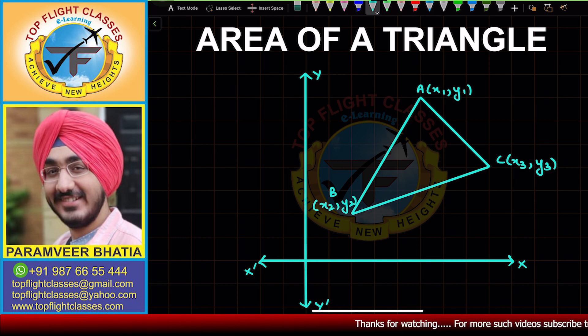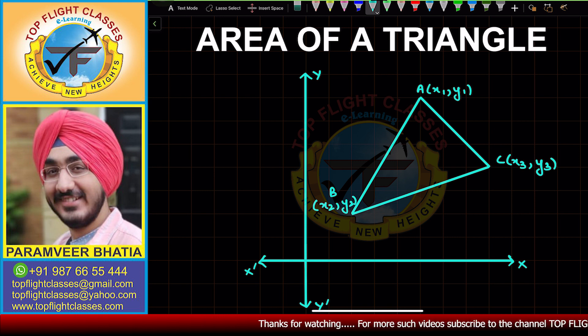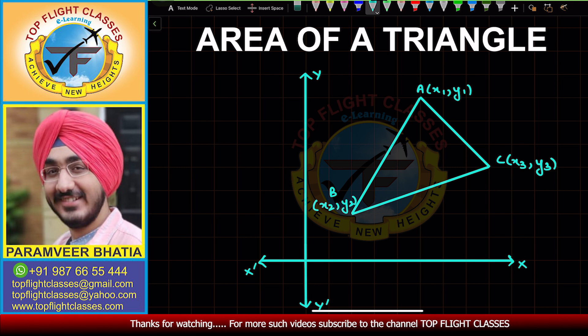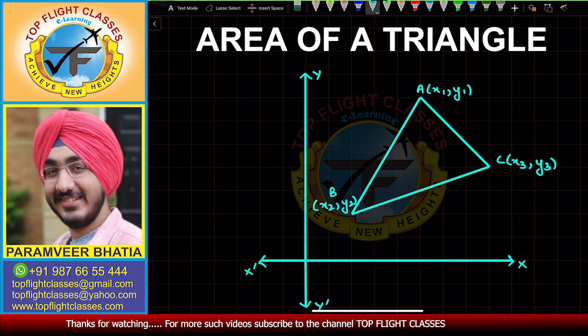For the area of a triangle, basically we have a graph with a triangle and three vertices whose coordinates are given. We have a direct formula that we will derive.